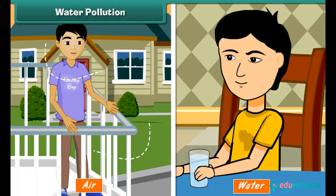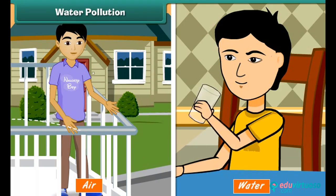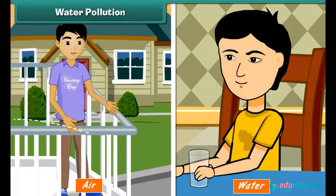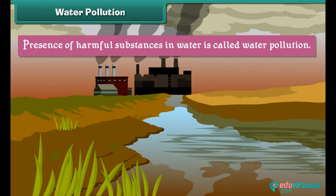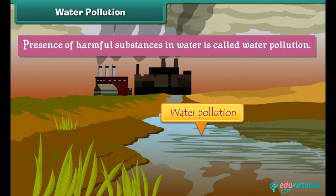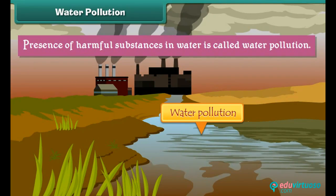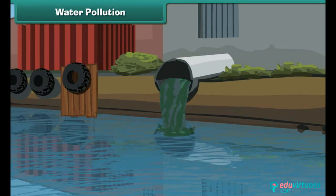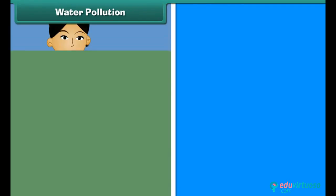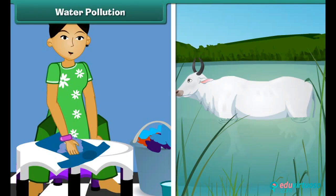Water pollution. Like air, water is also important for our survival. Presence of harmful substances in water is called water pollution. Domestic and industrial sewage pollute water. Activities such as washing clothes and bathing animals in rivers also cause water pollution.